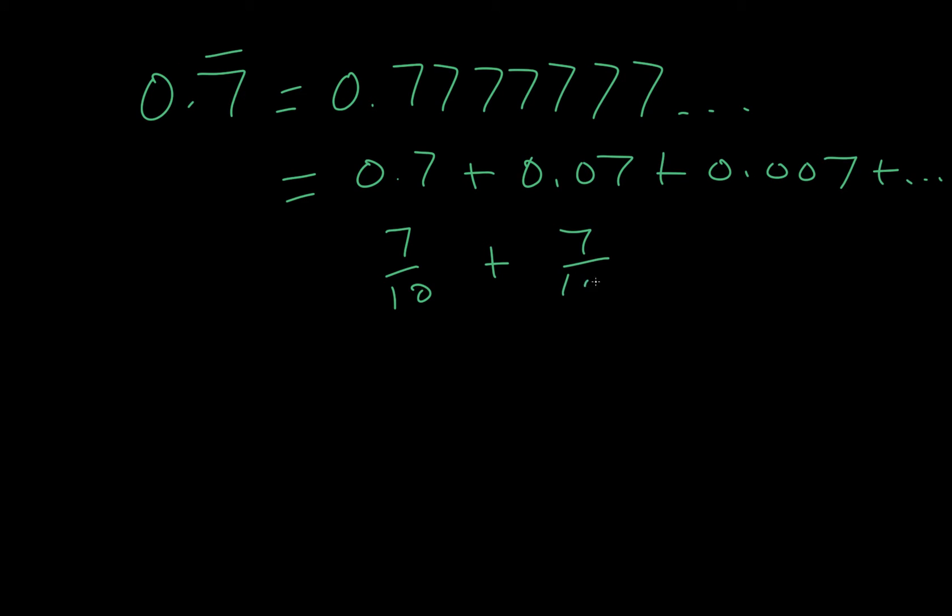This we can write as a fraction, 7 tenths. This we can write as 7 one hundredths. This we can write as 7 thousandths. And that's actually how we pronounce these, right? So this is 7 tenths, 7 one hundredths, 7 one thousandths, and so forth. So we have this going on.